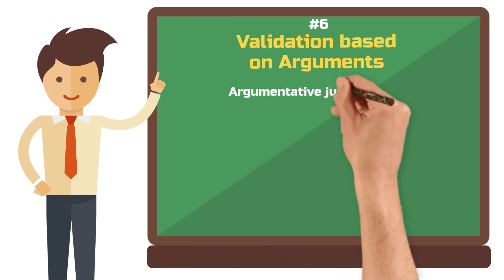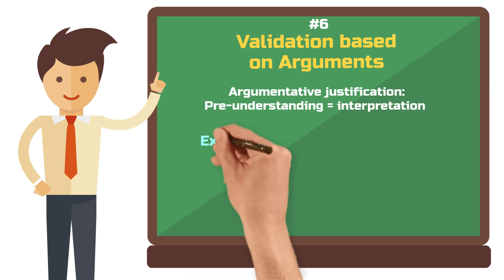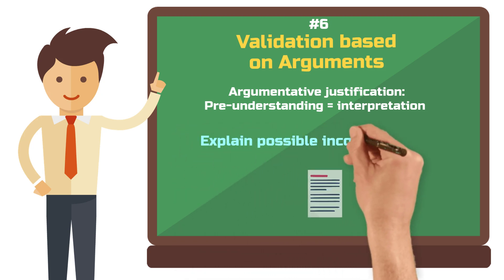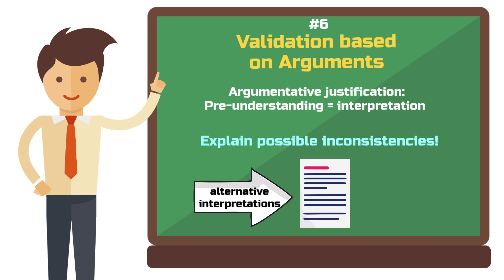In argumentative validation, the preliminary understanding you have and the respective interpretation must align, so that the interpretation is guided by theoretical considerations. What this means is that the interpretation itself must be coherent, and you must explain any possible inconsistencies. To support your interpretation, you can also consider and check alternative interpretations — for example, from other theories. Even rebuttals or negative viewpoints can contribute to securing and justifying your interpretations, which supports the validity of your results.